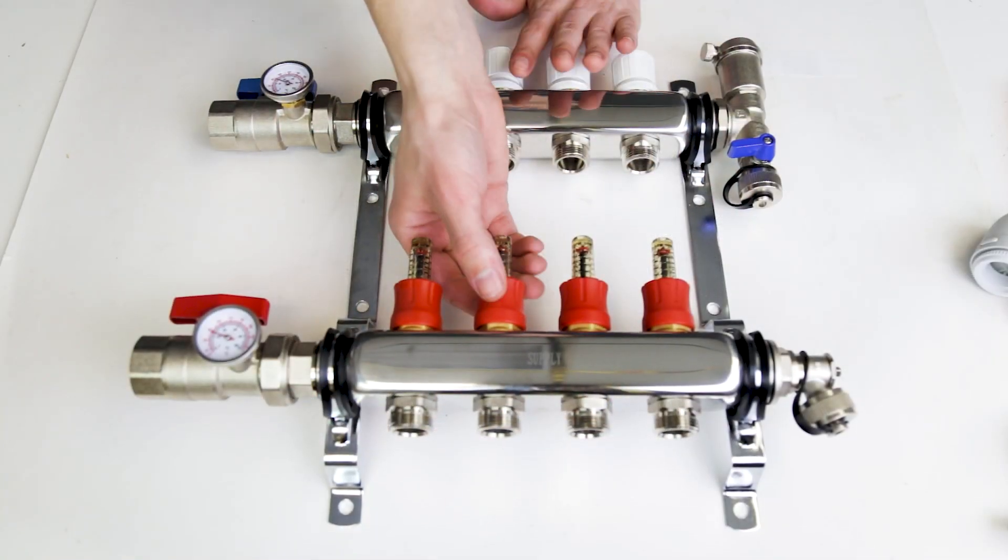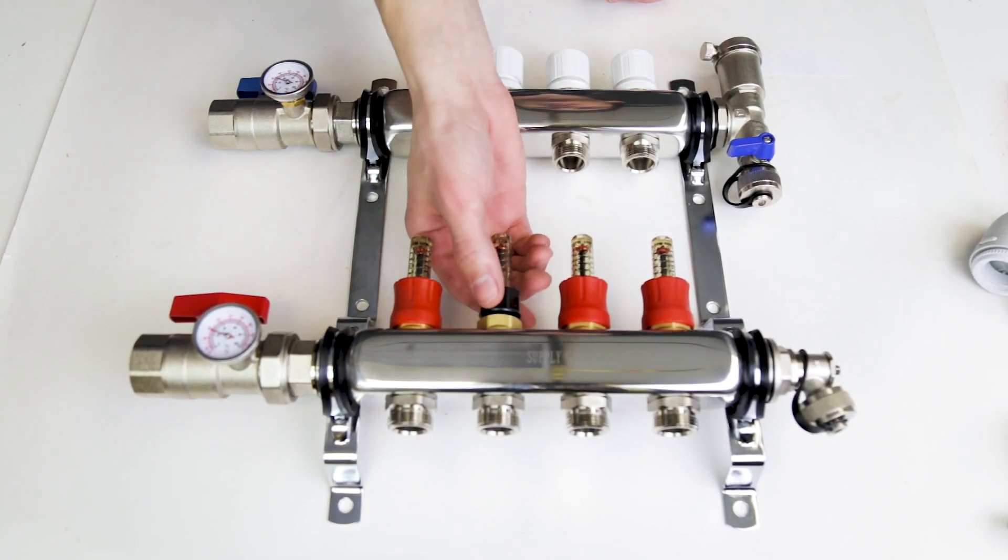To adjust the flow, take off the locking ring at the bottom of the meter, then turn the adjusting nut.